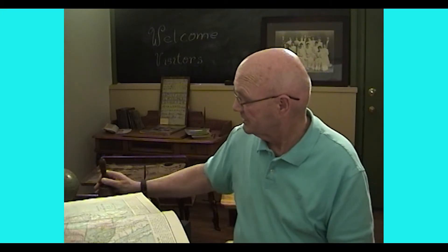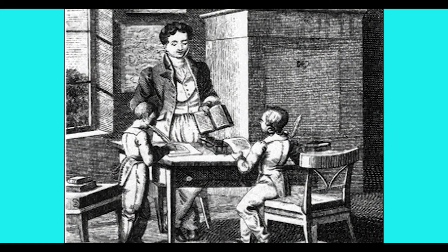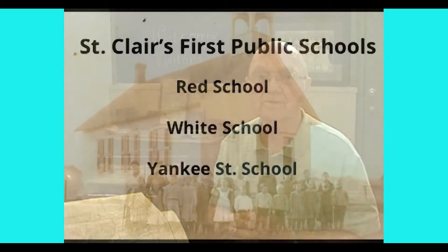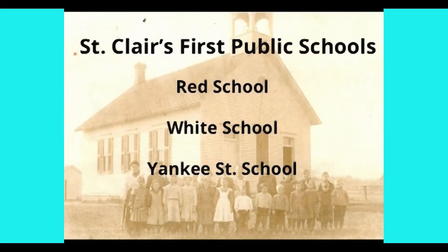And in fact, some of the earliest schools were like the schools we have today. Children talk about being homeschooled. Well, the first schools in St. Clair were actually in homes. Children stayed at home and a teacher would come in. The teacher might be a minister or it might be a businessman, but the children learn at home. Now, the first schools, the actual buildings in St. Clair that were used as schools were called the Red School and the White School and the Yankee School.